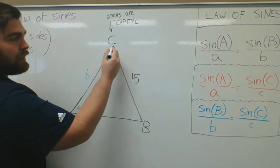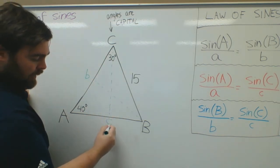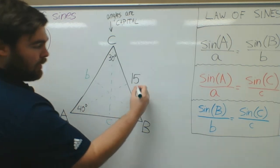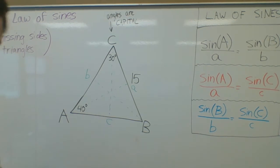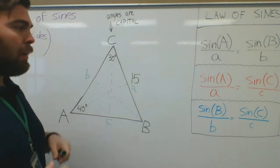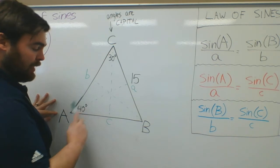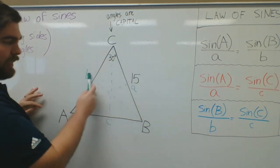This is capital C, so this side here is going to be lowercase c. This is capital A, so this side opposite of it is going to be called lowercase a. So what we're going to do is we're going to set up a ratio. There's a ratio of this angle and this side to this angle on this side and this angle on this side.